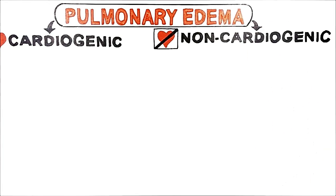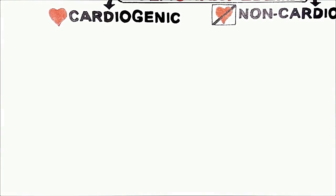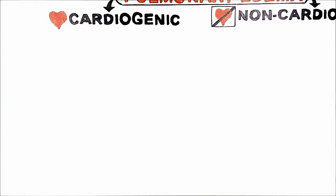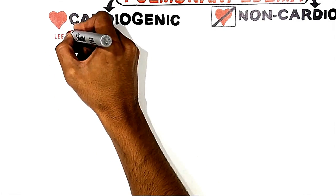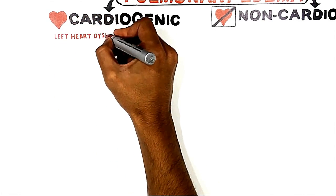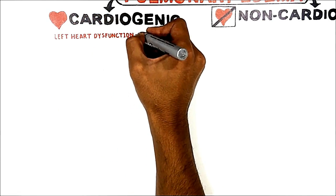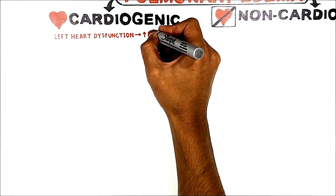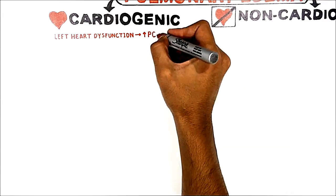First, let's talk about cardiogenic edema. Cardiogenic means that the reason for the pulmonary edema is dysfunction of the left side of the heart, which leads to increased pulmonary capillary hydrostatic pressure.